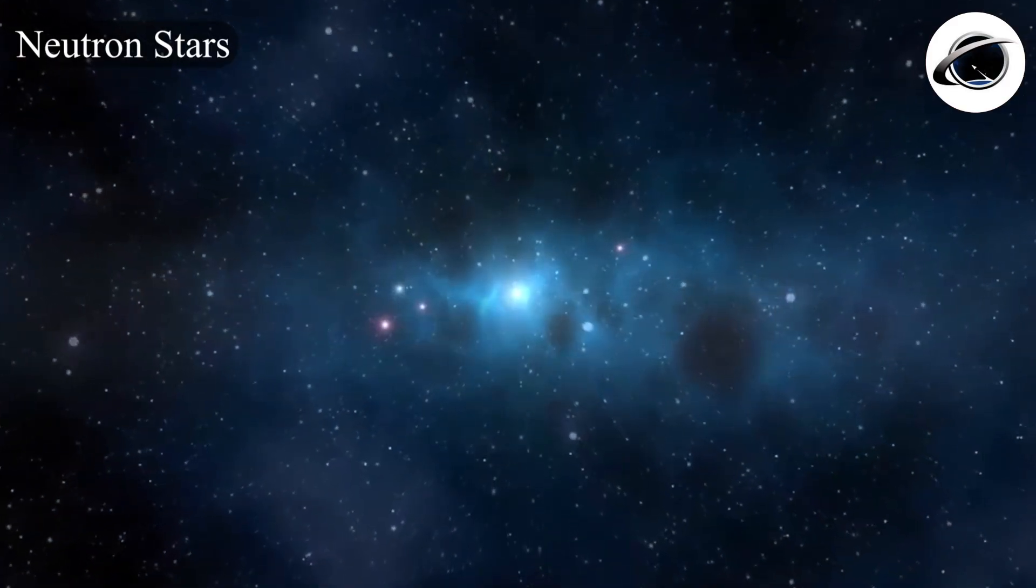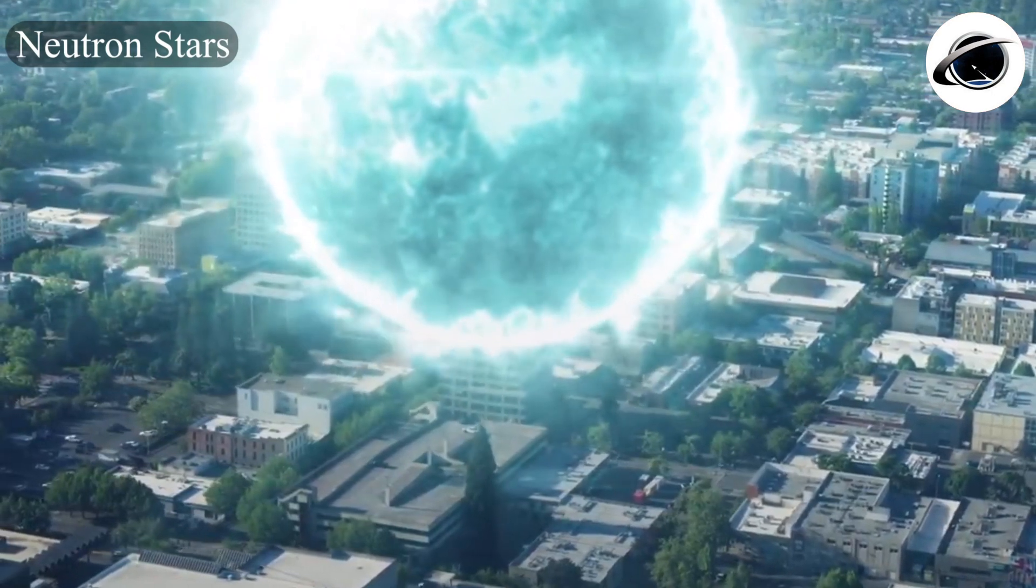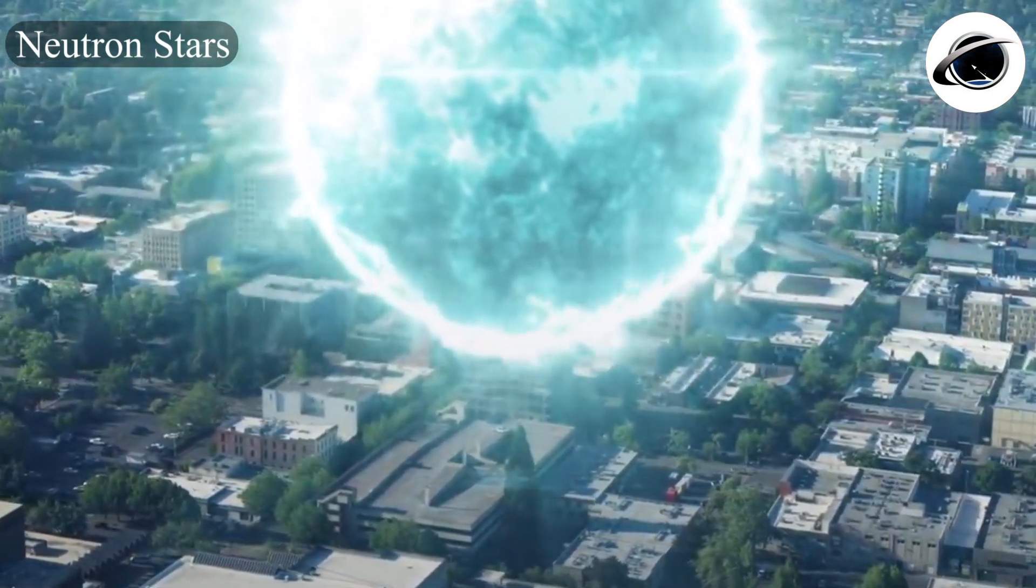However, if a neutron star entered our solar system, it could cause chaos, throwing off the orbits of the planets. If it got close enough, it could even raise tides that would rip the planet apart.